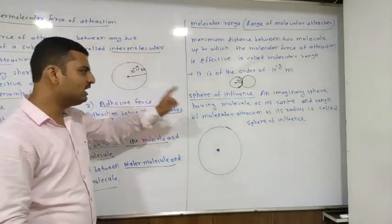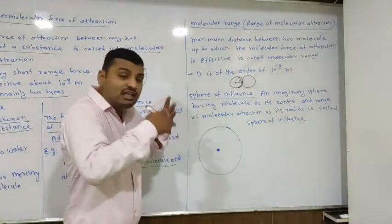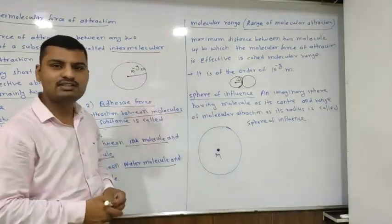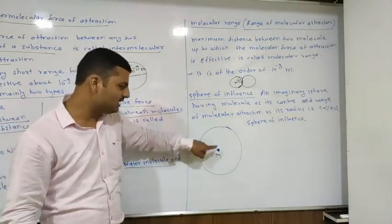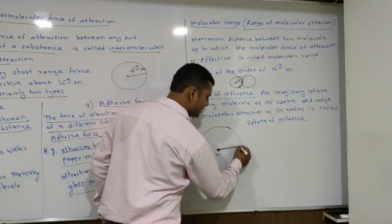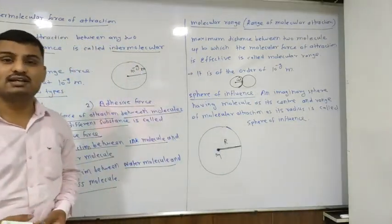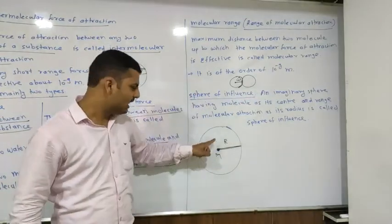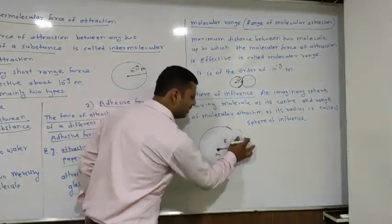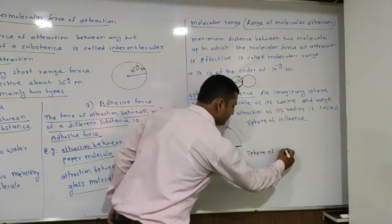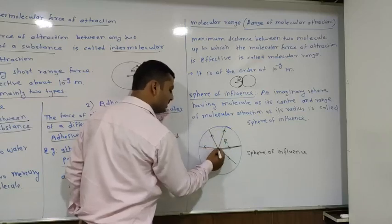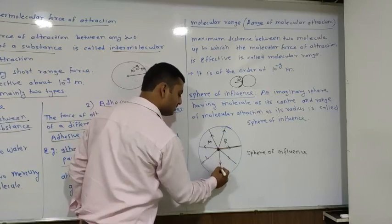The next definition is the sphere of influence. An imaginary sphere having the molecule as its center and the range of molecular attraction as its radius is called the sphere of influence. The radius of that sphere of influence equals the molecular range, and the molecule is at the center.